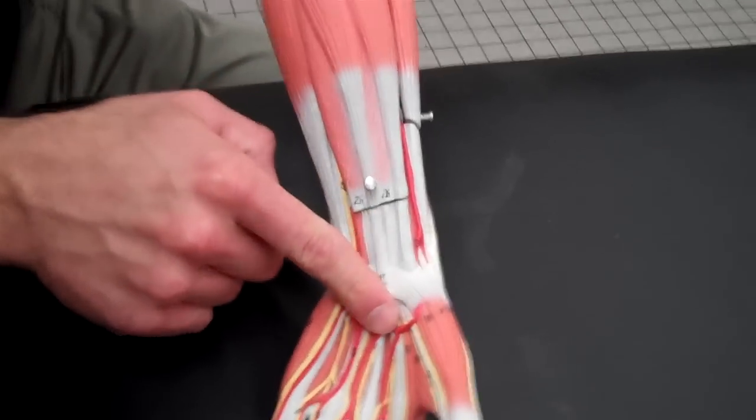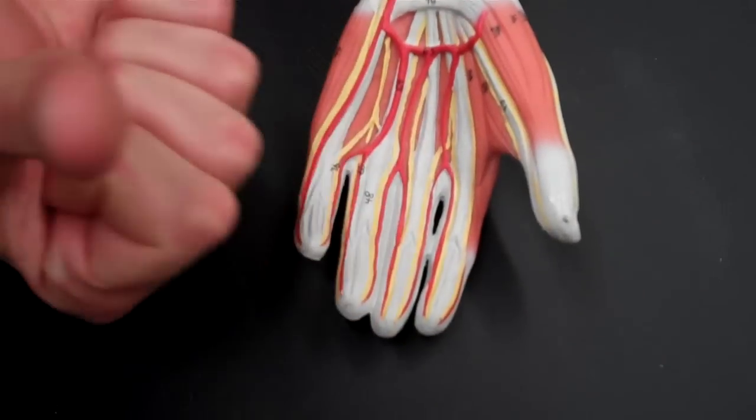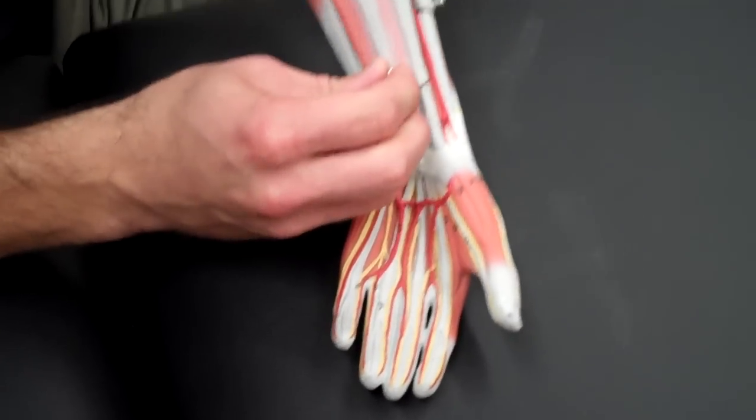So this muscle comes all the way down to your fingers and helps you close your hand. And if I remove this one,